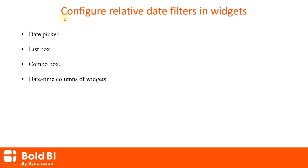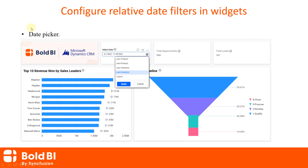Relative date filters can be configured in date pickers, list boxes, combo boxes, and date time columns. First, I'll show you how to configure a relative date filter in a date picker.